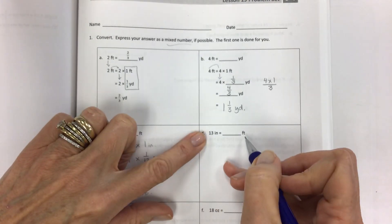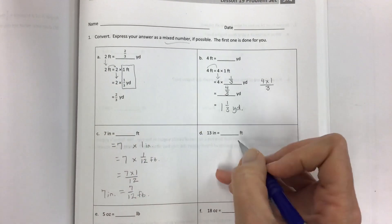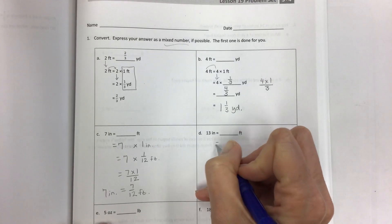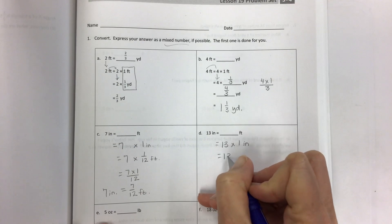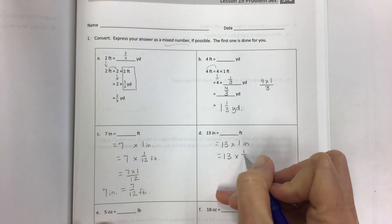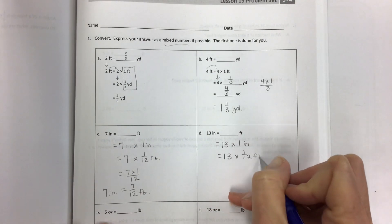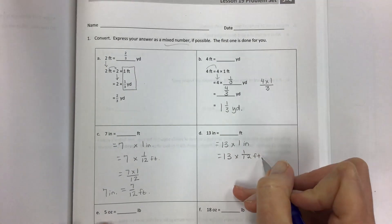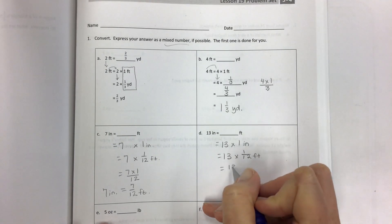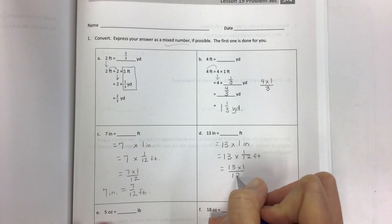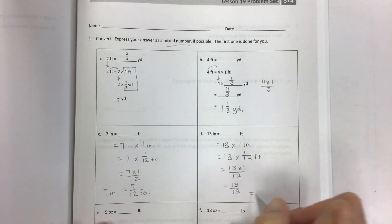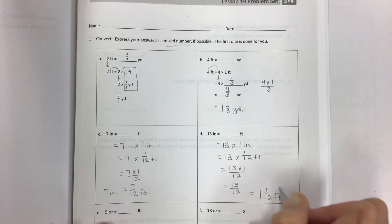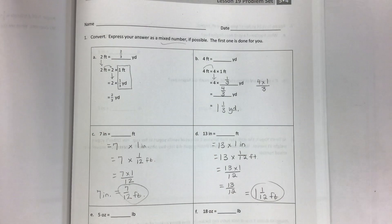Thirteen inches equals how many feet? Now, if you know that 12 inches are in a foot, then you're thinking, oh, it's just over one foot. And I would say, yeah, you're right. So 13 times one inch. And then one inch is one twelfth of a foot. And then 13 times one over 12. And then 13 twelfths. But we don't want to leave it like that. So we get one and one twelfth feet. Great.